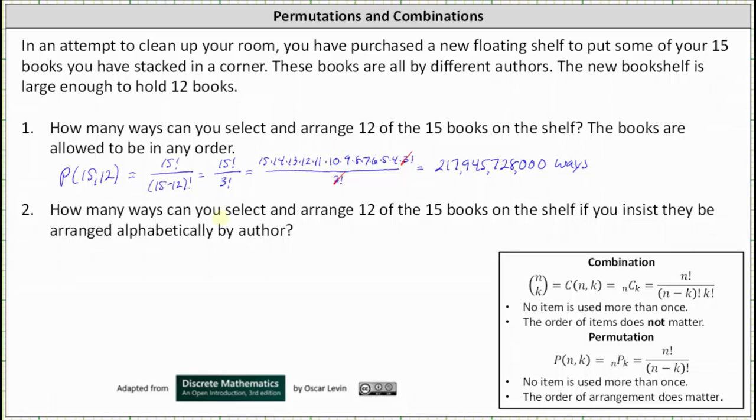Number two: How many ways can you select and arrange 12 of the 15 books on the shelf if you insist they be arranged alphabetically by author? To answer this question, we'll actually use a combination, where for a combination, no item is used more than once.